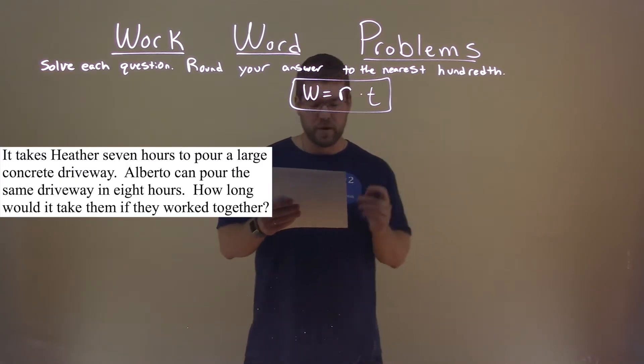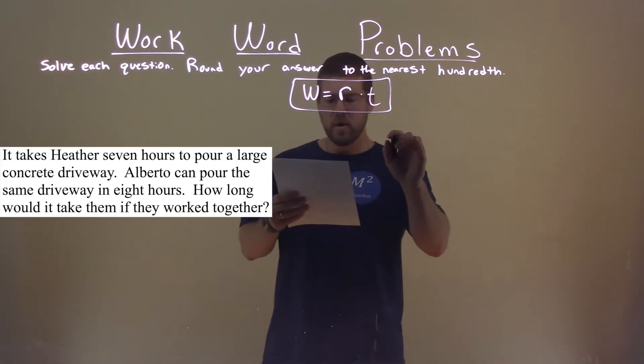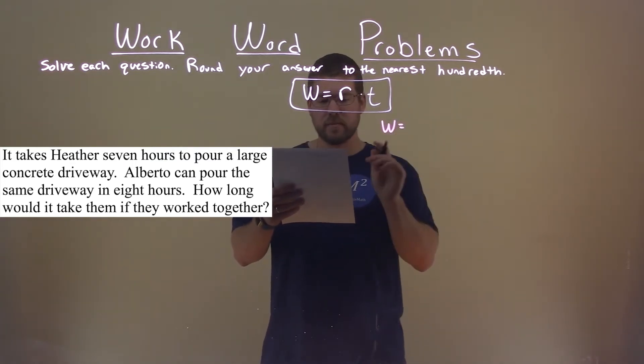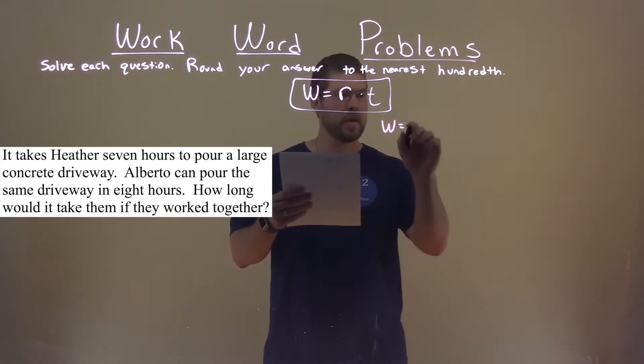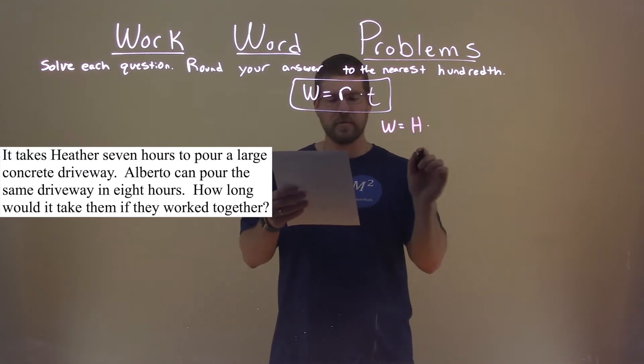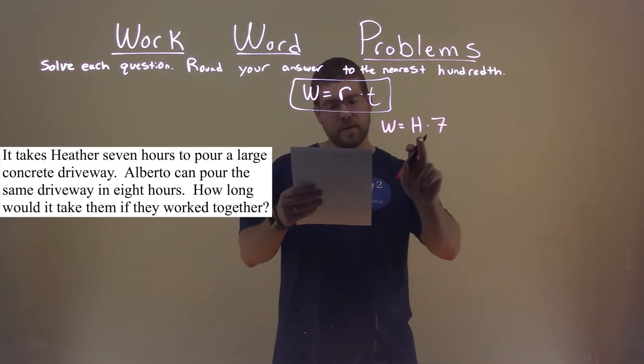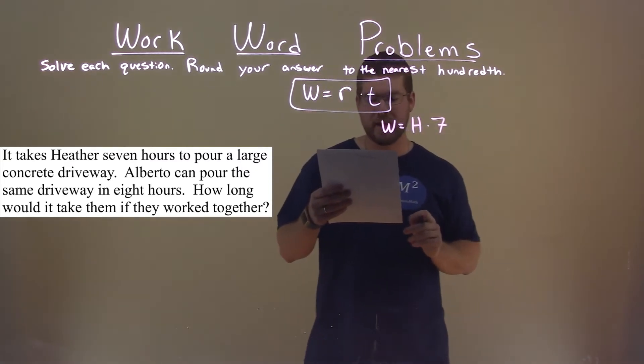So let's break down what we know. The work, whatever that work is, which is pouring a large concrete driveway. Heather's rate times time, and time is seven. So the work done is equal to Heather's rate times the time it took her, seven hours.